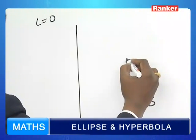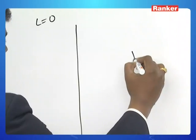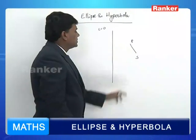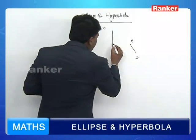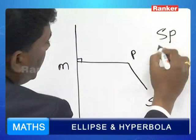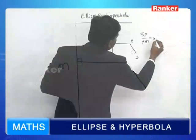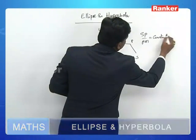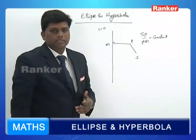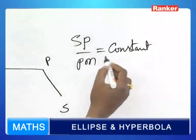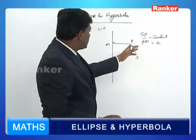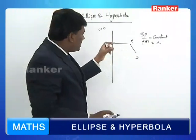If we choose a variable point P such that the ratio of its distance from the fixed point and the fixed line — that is SP and PM — is a constant, SP by PM equals a constant, then this locus will form a conic section as we have discussed in earlier classes. This particular constant is defined as the eccentricity, shortly denoted as e.